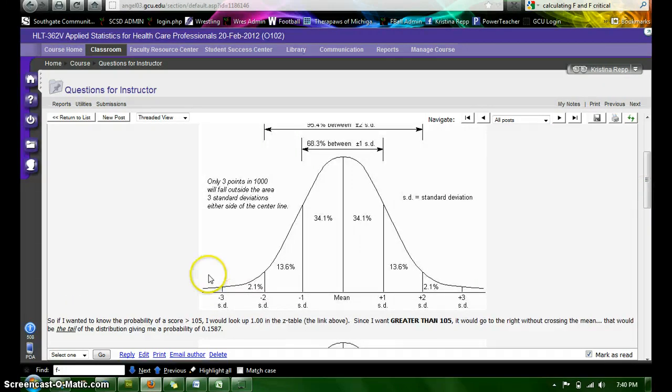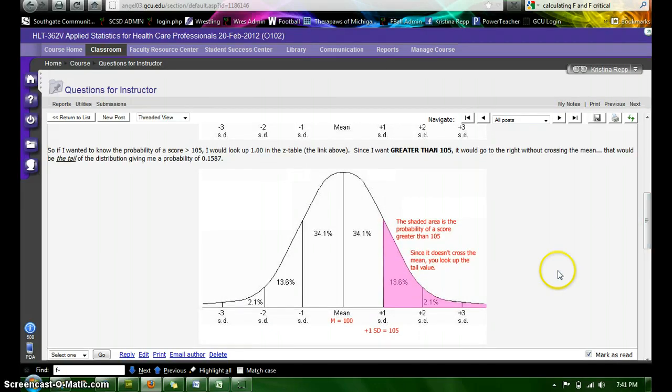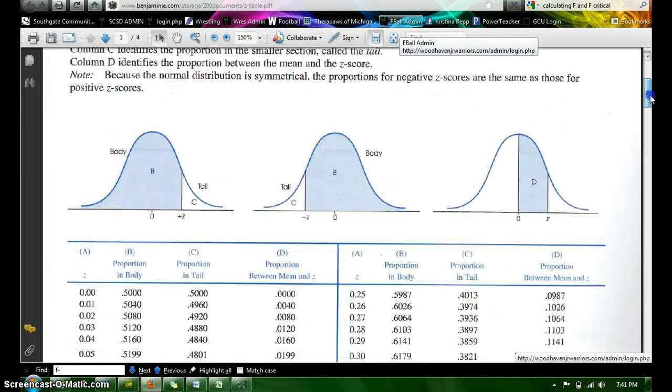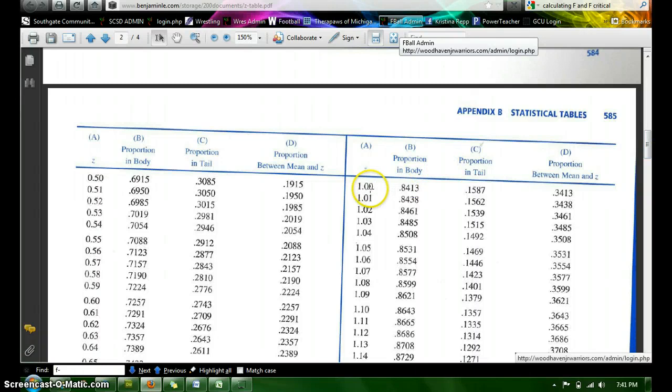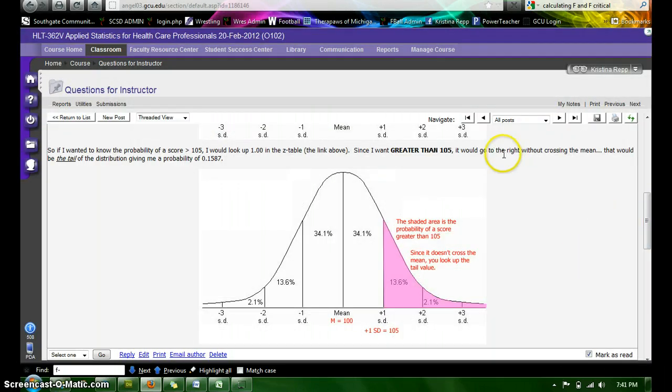So let's say I wanted to know the probability of a score greater than 105. I would look up that Z-score in the table that I gave you and try to identify where that is. I usually start by drawing a picture of what that looks like. If I know that 105 is a standard deviation of 1, because I subtracted the mean from it and divided by the standard deviation, and I wanted to know the probability of getting a score greater than that, then this pink area is that probability. Now that pink area does not cross the mean line, that means I would be looking up a tail value. So I go to my Z-table and I'm going to find 1. Now a Z-score of 1 in the tail is 0.1587. So therefore the probability of a score greater than 105 is 0.1587.